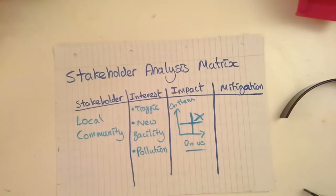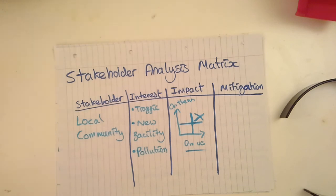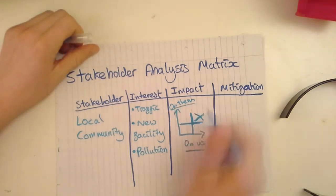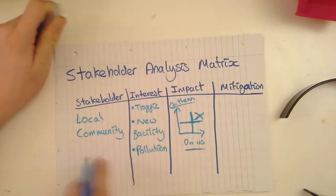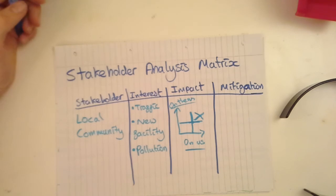They might complain a lot to the local council, saying the noise will prevent their baby from sleeping or there's going to be too much traffic, and give a lot of good reasons why the stadium shouldn't be built. This could affect whether or not we get planning permission. We're also going to have a lot of impact on them — we're going to cause traffic and pollution, but we're also going to give them a new facility, which is a positive impact.